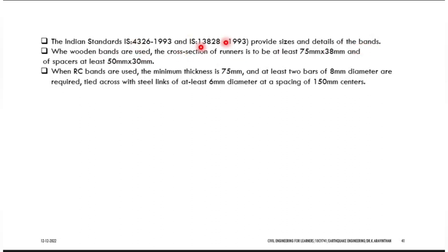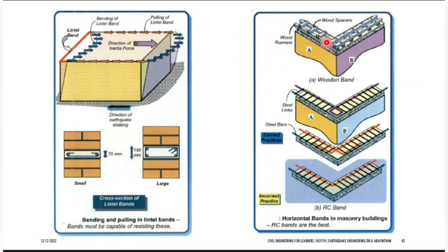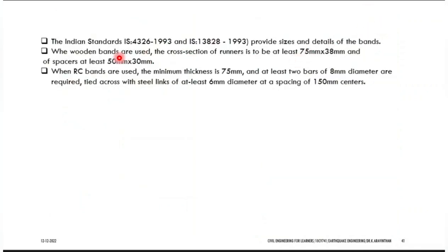From these two code books, you can get the dimensions. Wooden bands require at least 75 mm × 38 mm cross section. In one direction it is 75 mm, and the other direction is 38 mm. Spacers should be at least 300 mm to 500 mm. The longitudinal bar should be 75 × 38 mm, and the spacer bar in the lateral direction should be 50 mm × 30 mm.